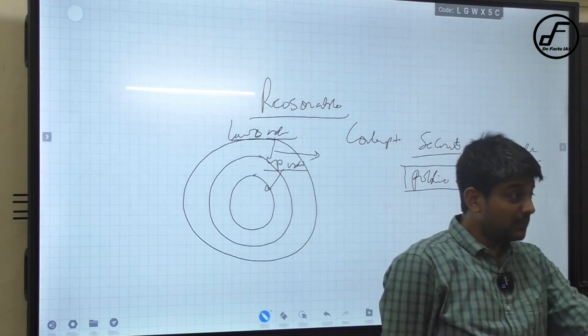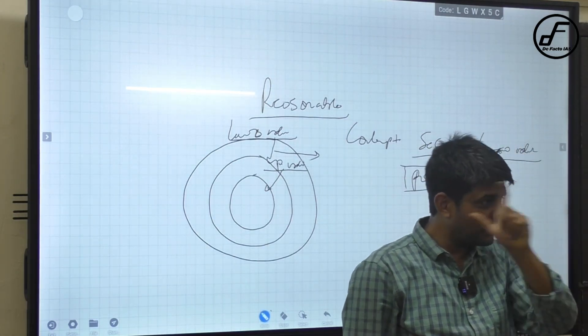Understood? Quite simple. There was a specific question in your exam: what is the difference between law and order and public order?